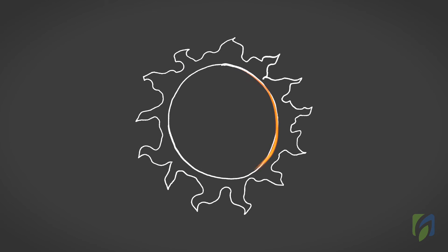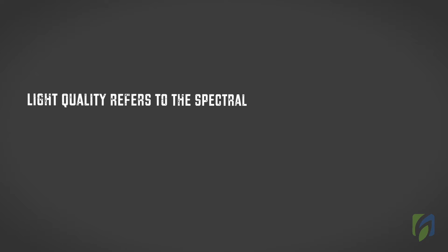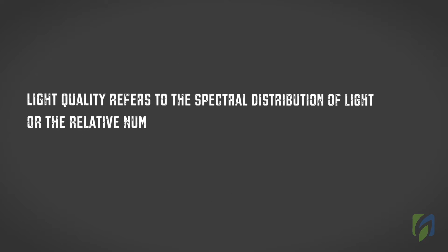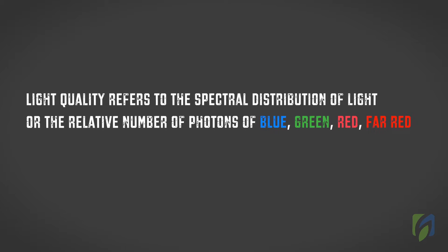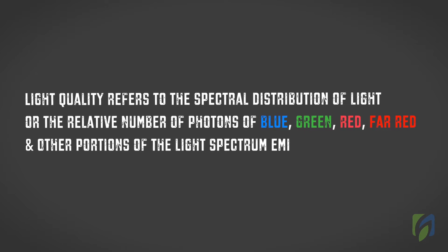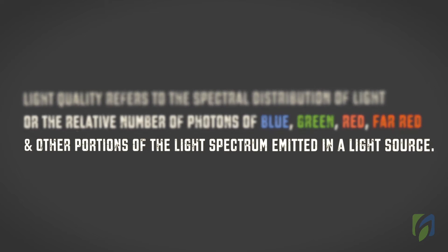Sunlight supplies a complete range of wavelengths. Light quality refers to the spectral distribution of light, or the relative number of photons of blue, green, red, far red, and other portions of the light spectrum emitted from a light source. Some of these portions are visible, whereas others are not.